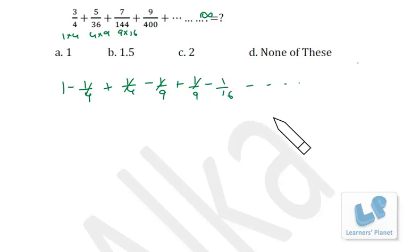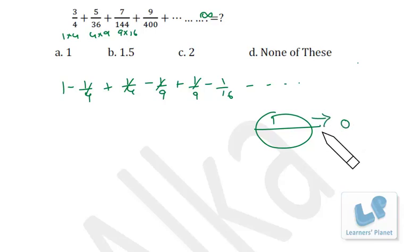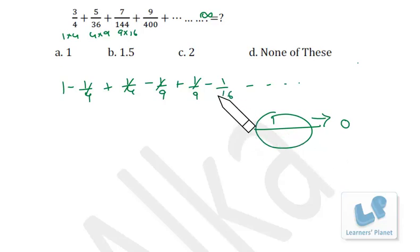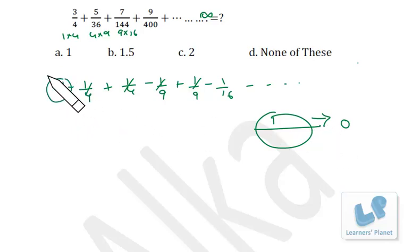At the end you will be getting a very big denominator with 1 in the numerator, so this entire quantity will tend to 0 — not exactly 0, but tending towards 0. Before that, all the terms will be cancelled, so we will be left with 1 only. That's a pretty simple problem.